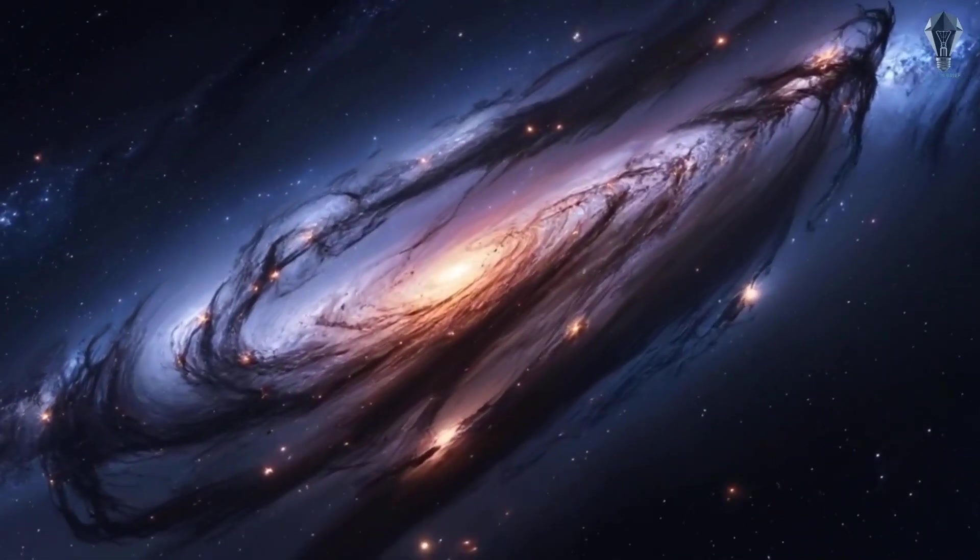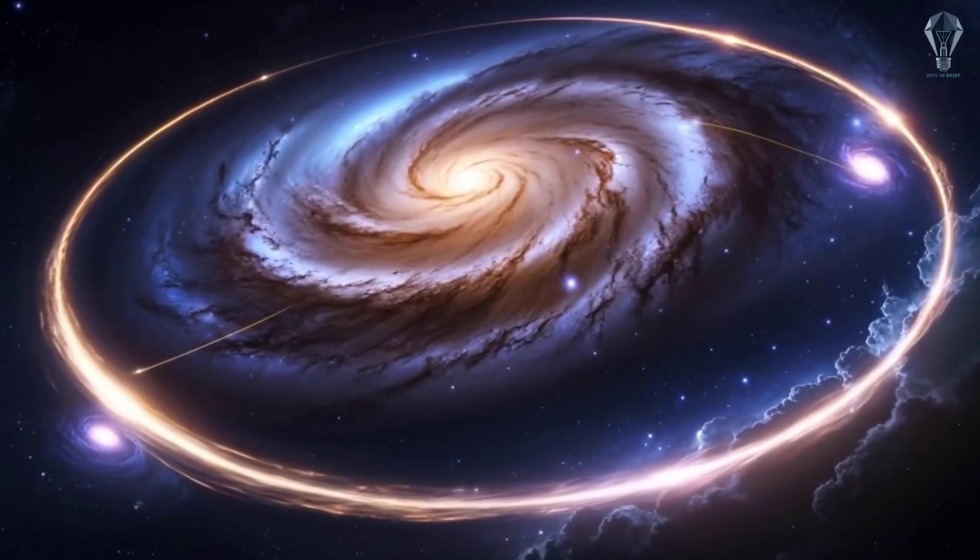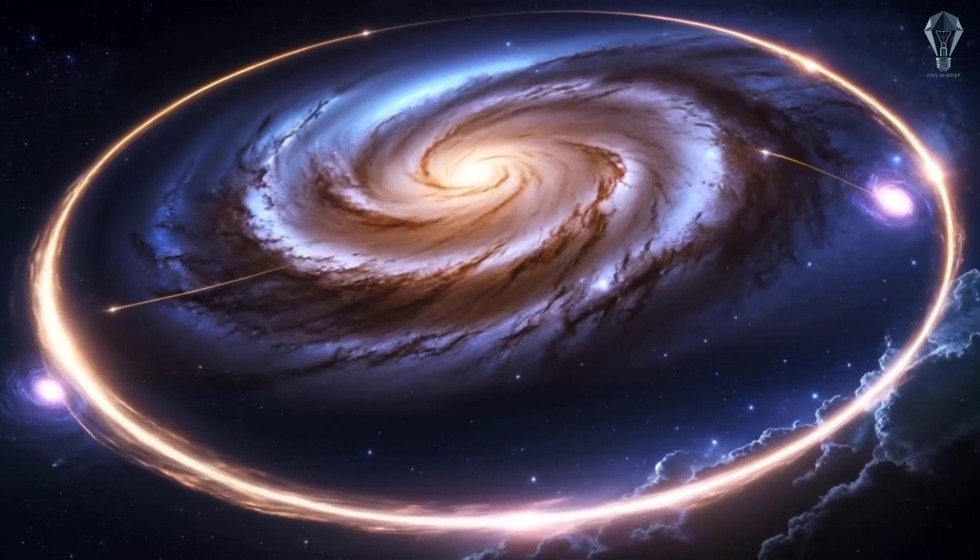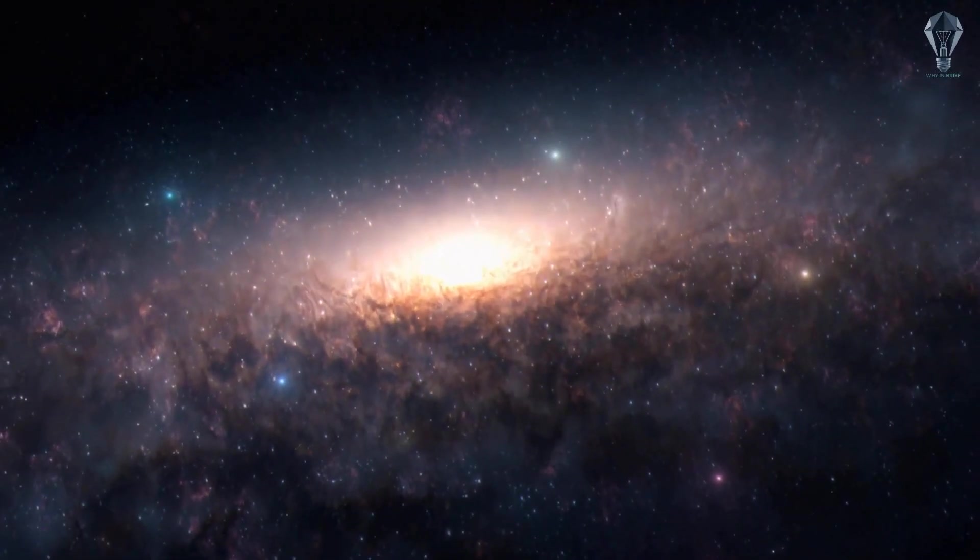The SMC is smaller and looks even more battered. Astronomers once believed these clouds were like loyal moons, forever orbiting the Milky Way. They seemed like predictable, if oddly shaped, neighbors.